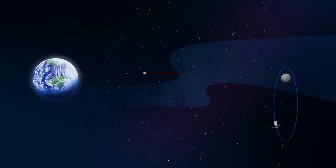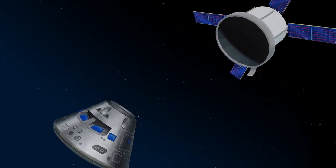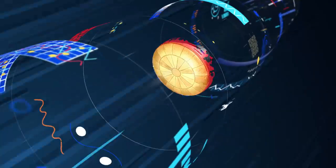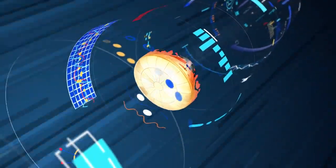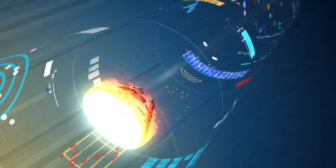As they near the end of this journey, the service module is released, and the crew module is oriented heat shield first. Entering Earth's atmosphere at 25,000 miles per hour, the friction of air slows Orion considerably, while also subjecting it to temperatures of 5,000 degrees.